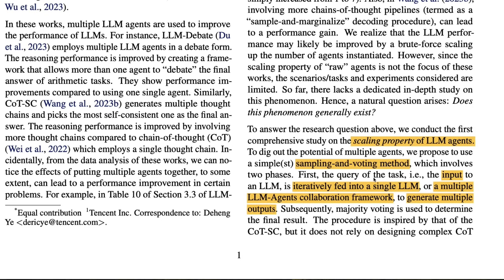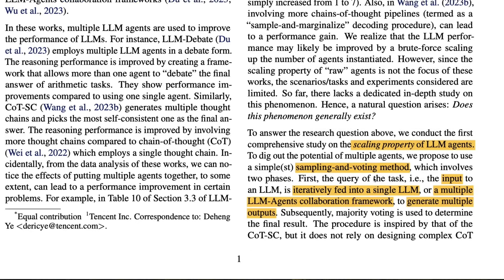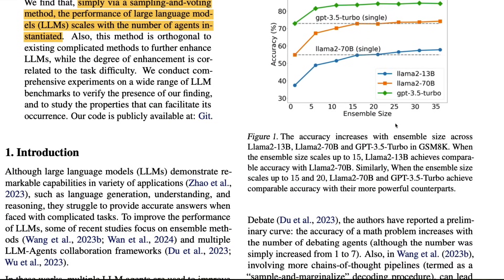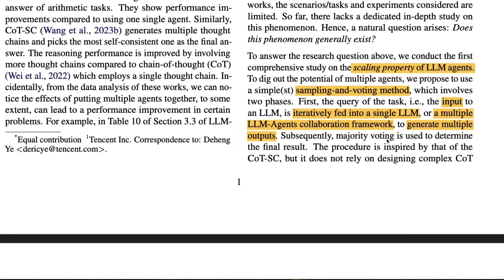For a query like 'What is the capital of the United States?', that query is sent to all models in the ensemble — for example, five models or 25 models. The question is fed into a single LLM or a multiple LLM agent collaboration framework, which generates multiple outputs. Those outputs are then taken back and majority voting is used to determine the final result.